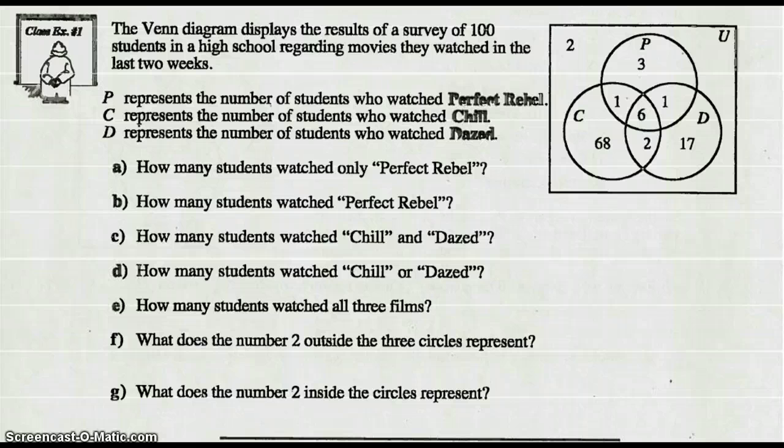Let's look at Example 1. The Venn Diagram displayed shows the results of a survey of 100 students in a high school regarding movies they watched in the last two weeks. P represents the number of students who watched Perfect Rebel, C the number who watched Chill, and D the number who watched Dazed. Part A asks us: how many students watched Perfect Rebel?